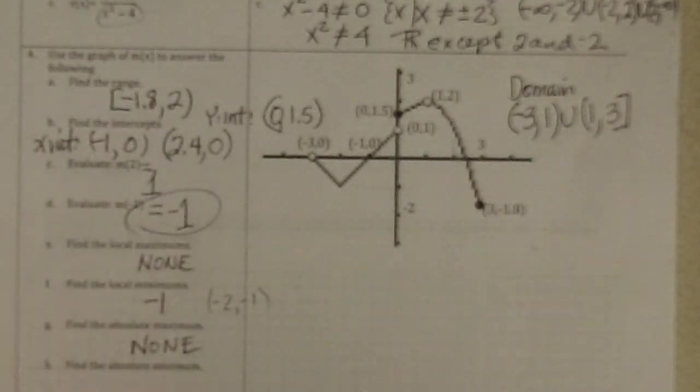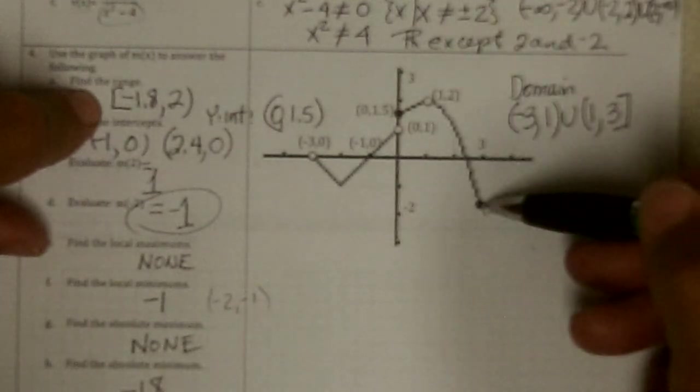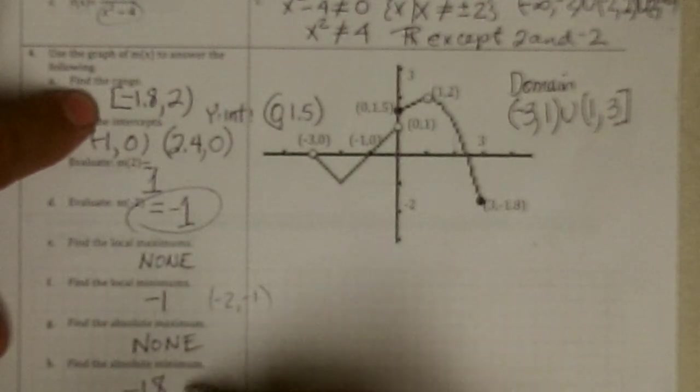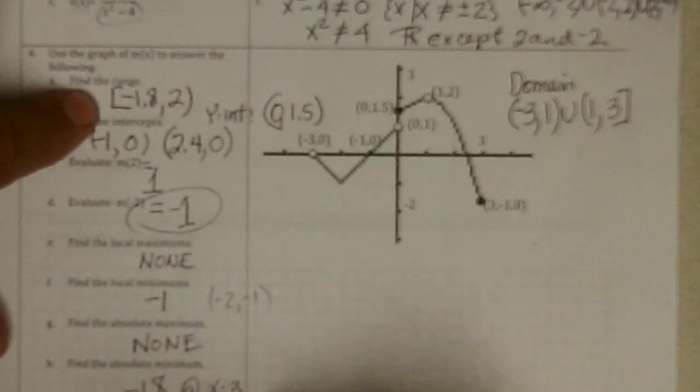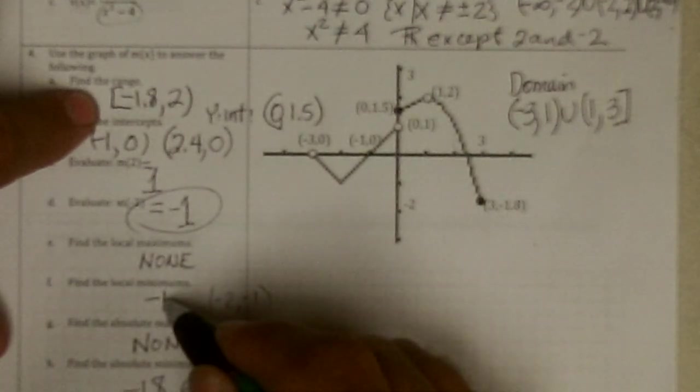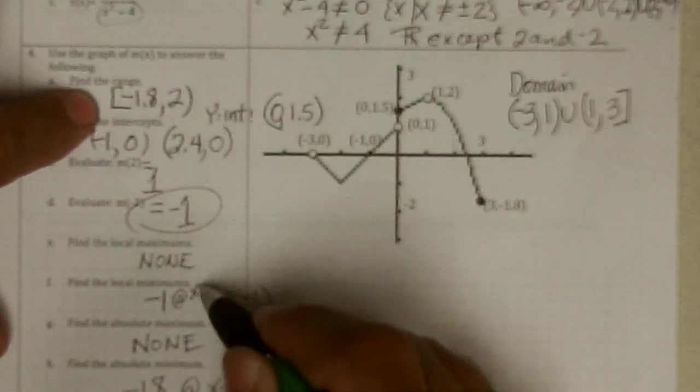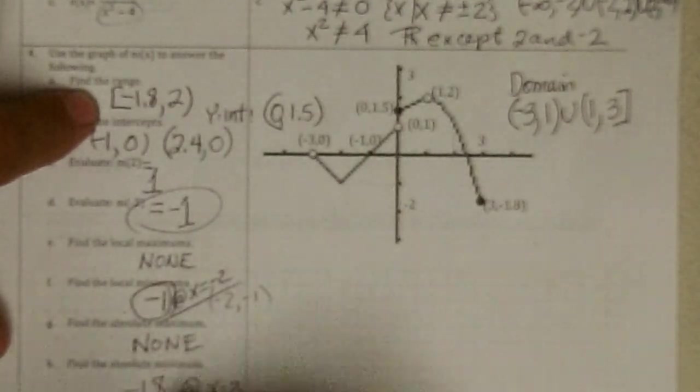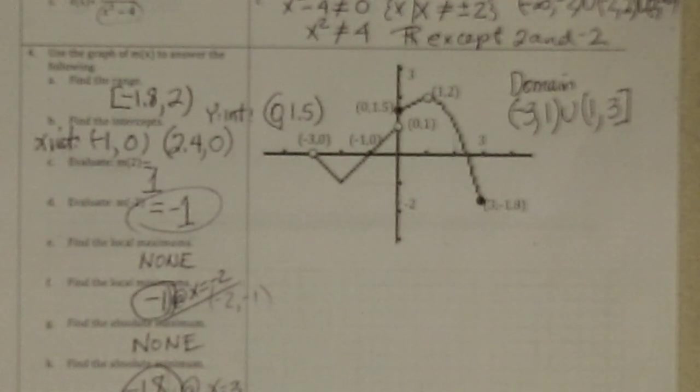And the absolute minimum is the bottom of the range, which would be negative 1.8. Or the lowest place on the graph. And there is a solid. So it does exist. And you can tell me it's at x equal 3 if you want. Just like you could say the local minimum is at x equal negative 2. If you want. But there's the local minimum. And there's the absolute minimum. Okay.